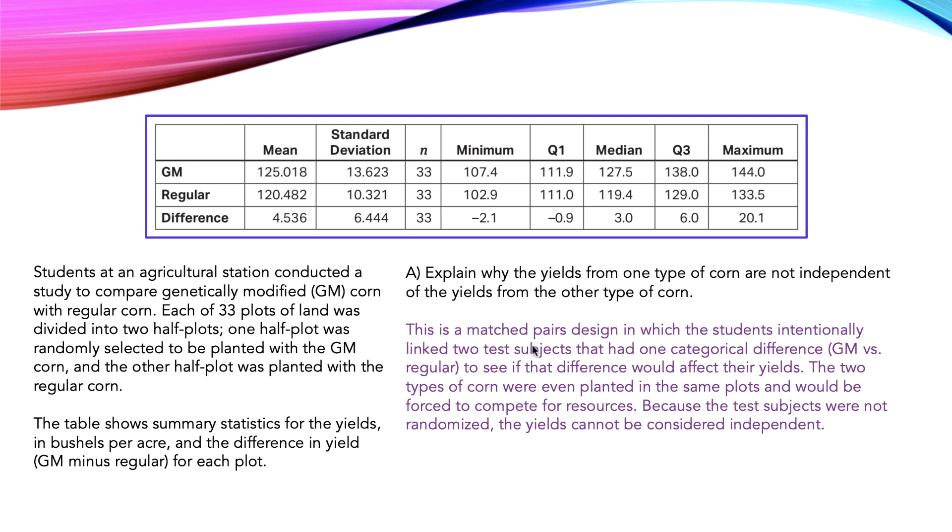This is a matched pairs design in which the students intentionally linked two test subjects that had one categorical difference, GM versus regular, to see if that difference would affect their yields. The two types of corn were even planted in the same plots and would be forced to compete for resources. Because the test subjects were not randomized, the yields cannot be considered independent.